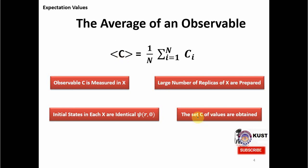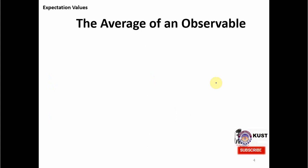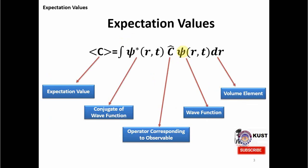Whenever we make the next experiment in this replica, we may not get the exact expectation value, but we might get very near to it. This is the conceptual idea: the average of C from the above experiment matches the integral. In other words, when we take the average of observable C measured in a large number of replicas, it actually matches this integral. This is the concept of expectation value in quantum mechanics.